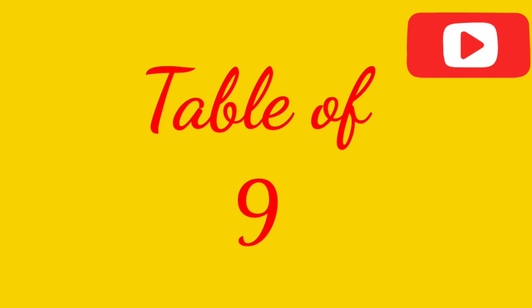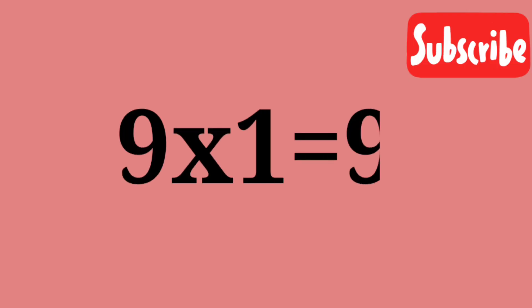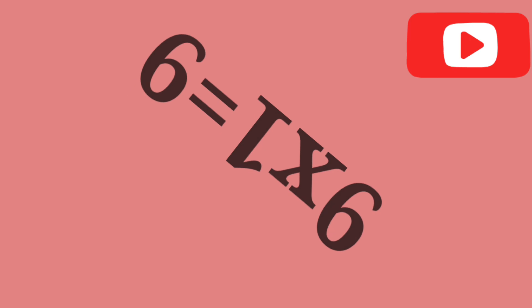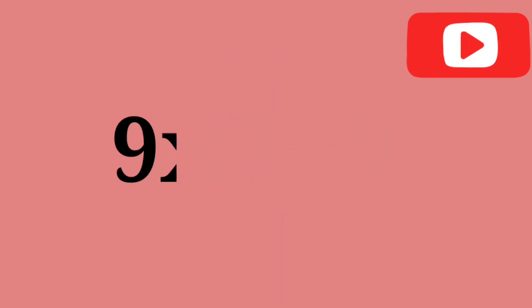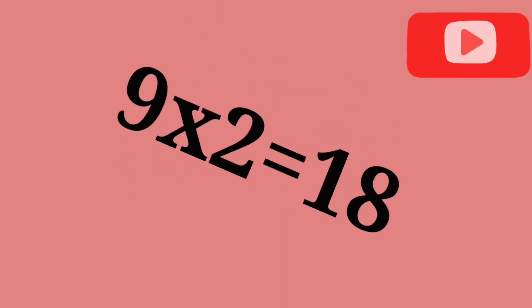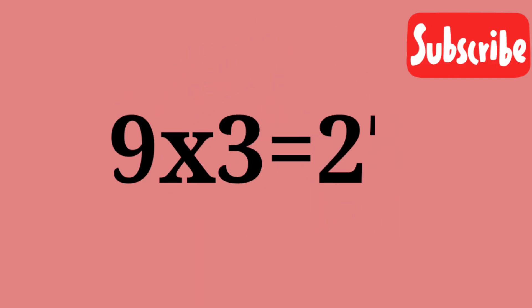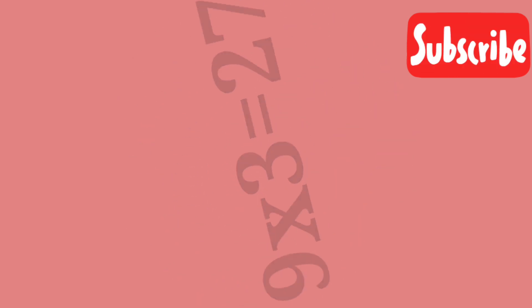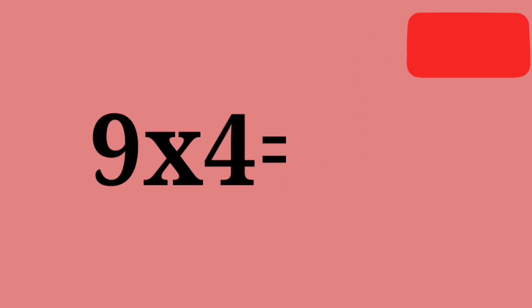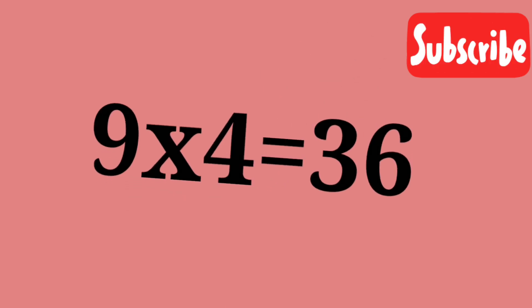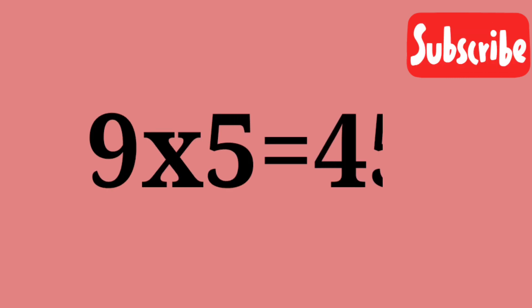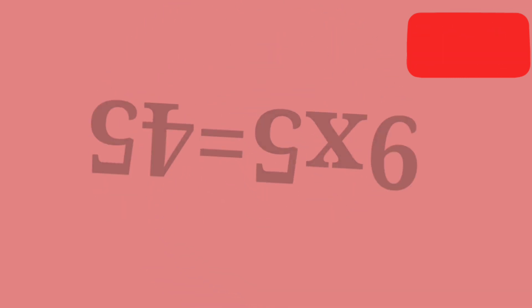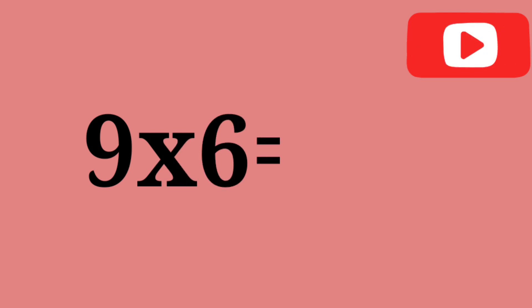Table of 9. 9 ones are 9. 9 twos are 80. 9 threes are 27. 9 fours are 36. 9 fives are 45.